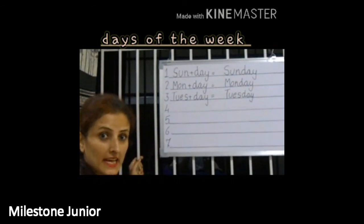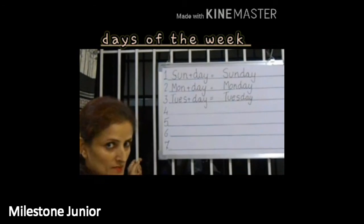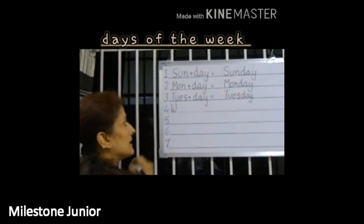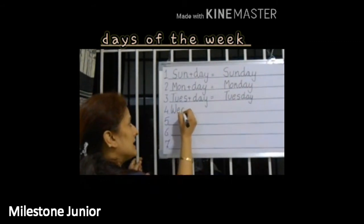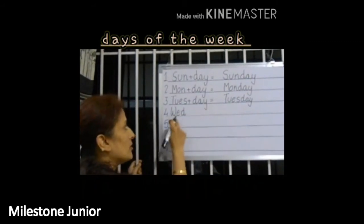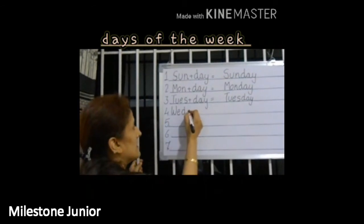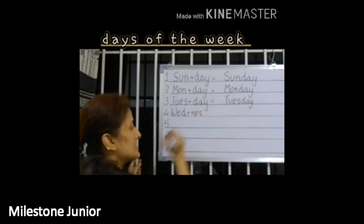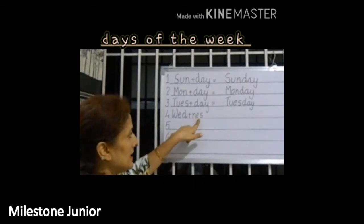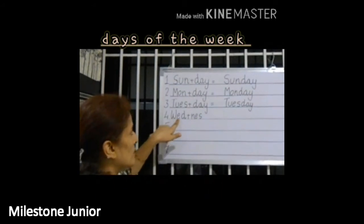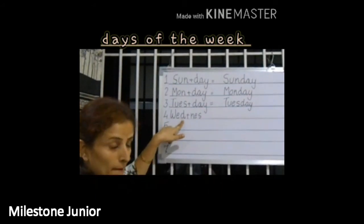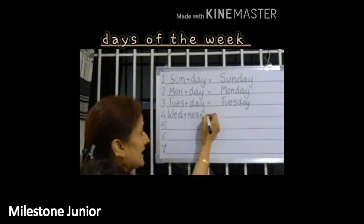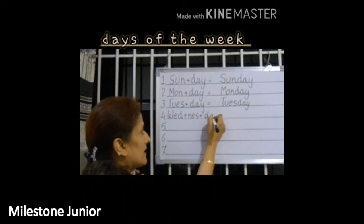Now, Wednesday. Wed. What is the spelling of wed? W-E-D — Wed. N-E-S — Nes. Day again: D-A — Day.